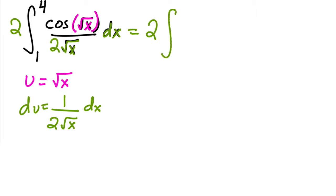Now, I'm going to do it the second way — with the limits of integration, swapping them on the fly. When x = 1, u = √1 = 1. When x = 4, u = √4 = 2. Now I don't have to worry about going back to x's — I just leave everything as u's.